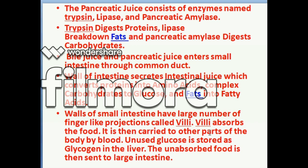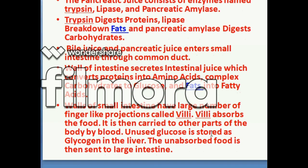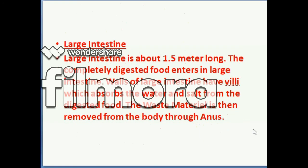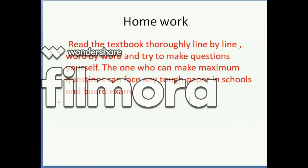Unused glucose is stored as glycogen in the liver. The unabsorbed food is then sent to the large intestine, which is about 1.5 meters long. The walls of the large intestine absorb water and salts from the digested food, and the waste material is then removed from the body through the anus.